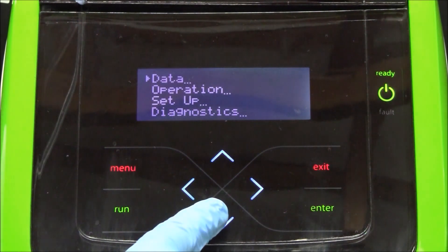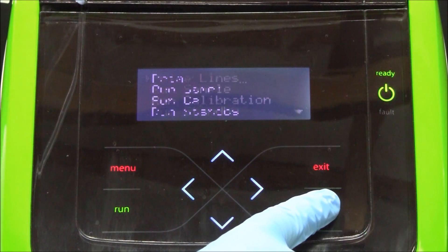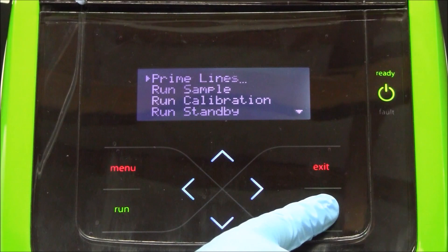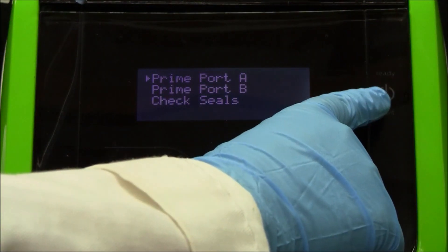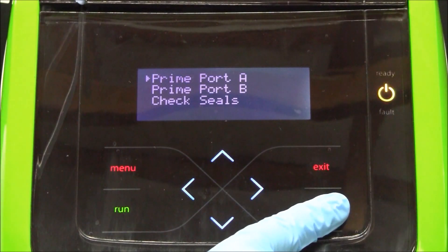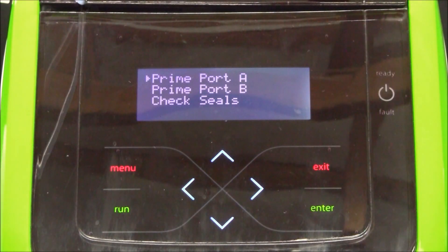In the operation menu, select prime lines. Prime port A three times to fill it with the calibrant solution. Wait for the green ready light before pressing enter. Each prime operation takes about three seconds.